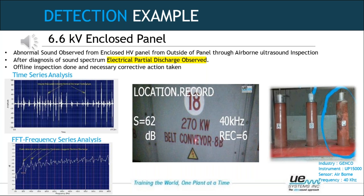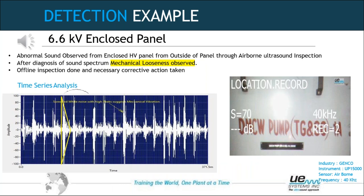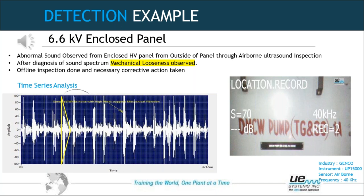Moving on — this case is from a power generation company, again using a 6.6 kV enclosed panel. After playing the sound file, you can hear it was totally different from the corona, tracking, and arcing sound files. This is the sound file for mechanical looseness. You can see the yellow triangles in the time series analysis. We found the mechanical looseness and the corrective action was taken.